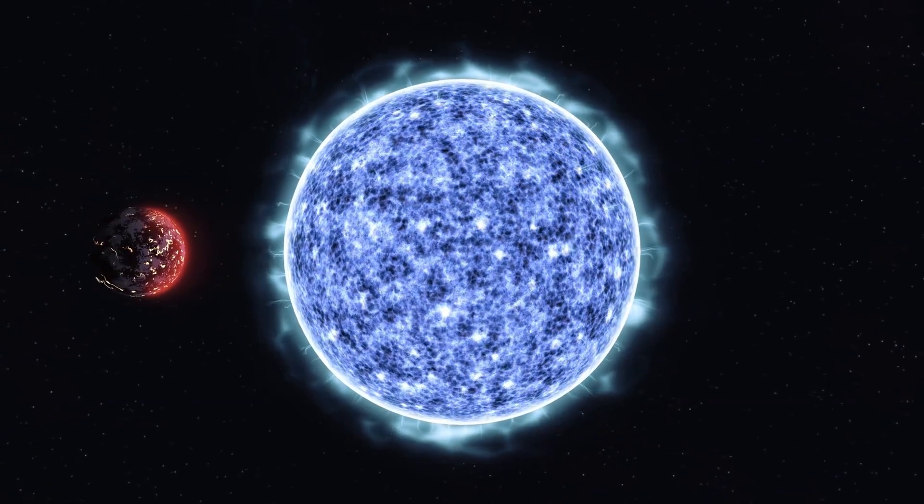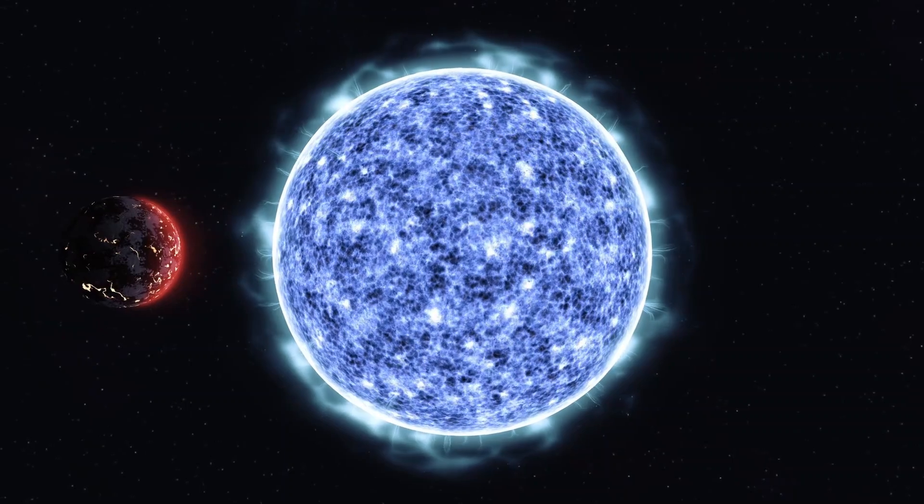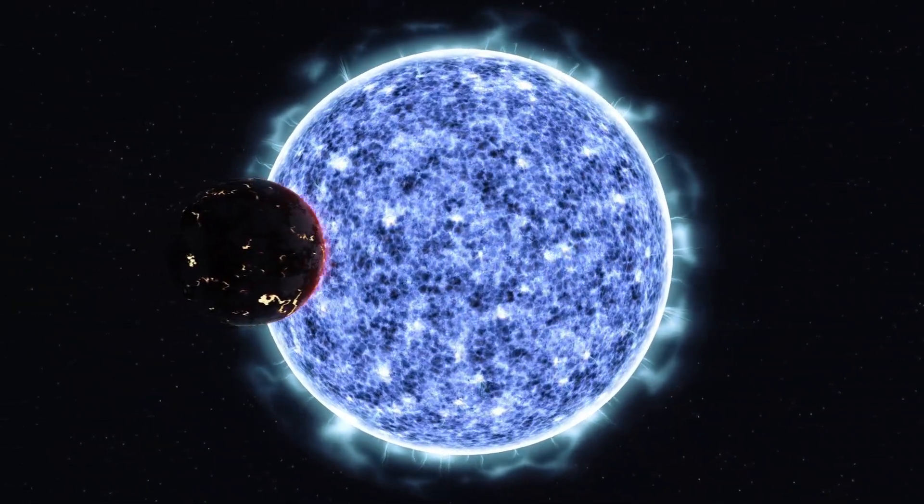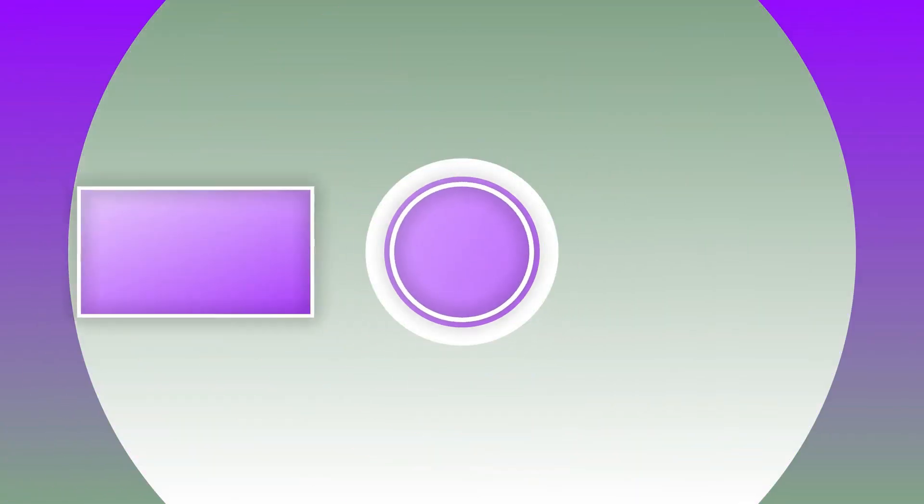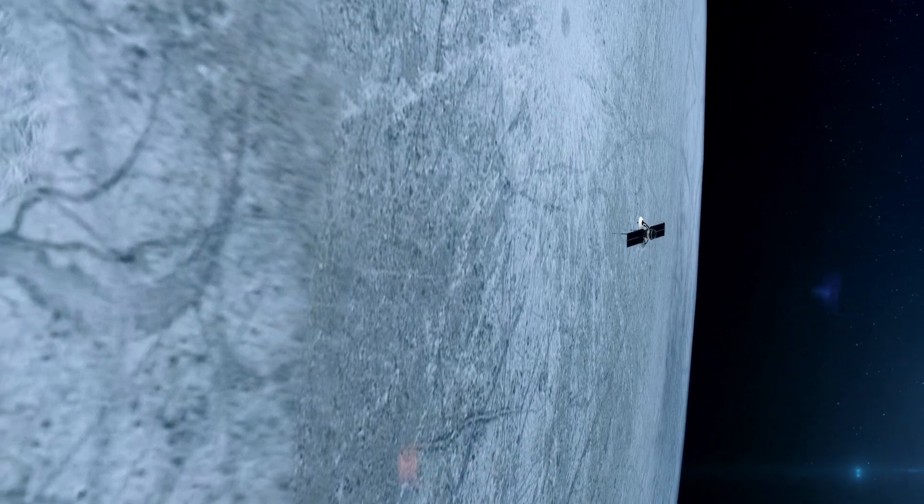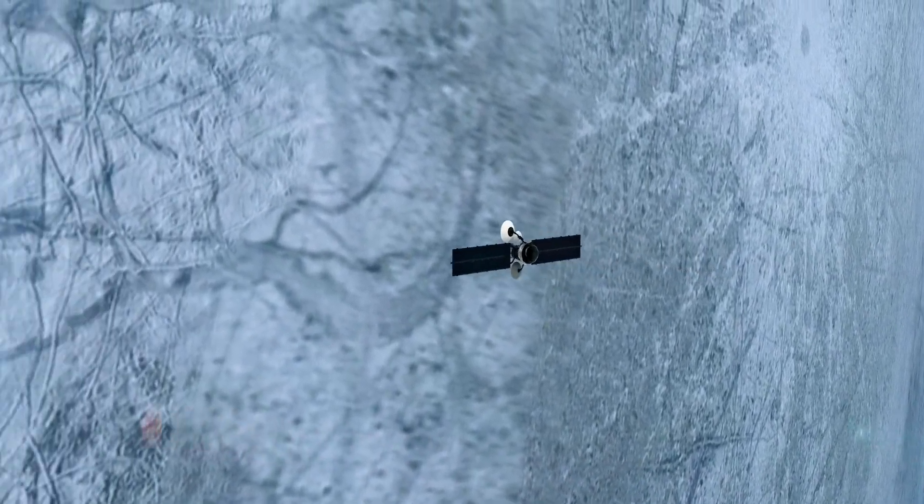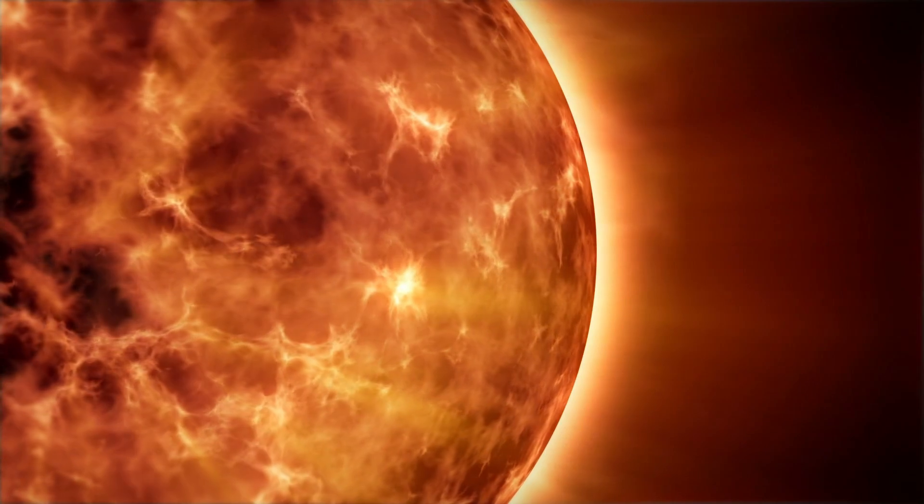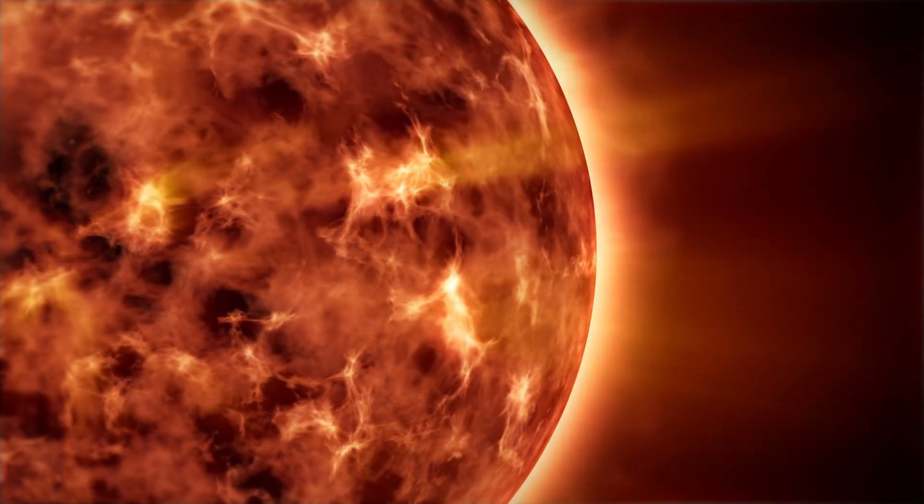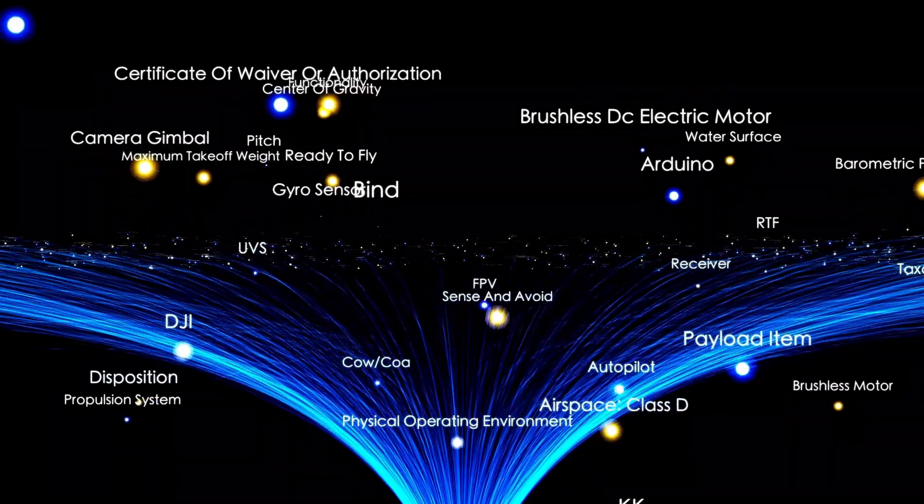Betelgeuse is known for its distinctive reddish color, which is due to its cool surface, which has a temperature of about 3,500 Kelvin. This temperature is much lower than the surface of our Sun, which reaches 5,500 Kelvin. This lower temperature means that Betelgeuse emits much less energy per unit area compared to the Sun. That is why, despite being one of the largest stars we know, it appears much dimmer. Betelgeuse is like that giant that is satisfied with a low profile and doesn't need to show off its size to feel important.